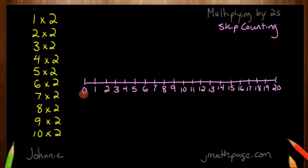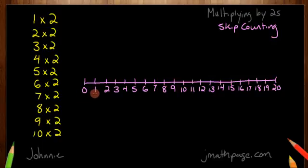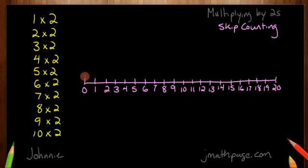So instead of counting 0, 1, 2, 3, 4, I should count by 2's. So 0, then 2, then 4, then 6. So my skip counting — I'm skipping the number in between. I only care about the ones that are 2's. So 0, 2, 4, 6, 8. Let's make this a picture to help ourselves understand it better.